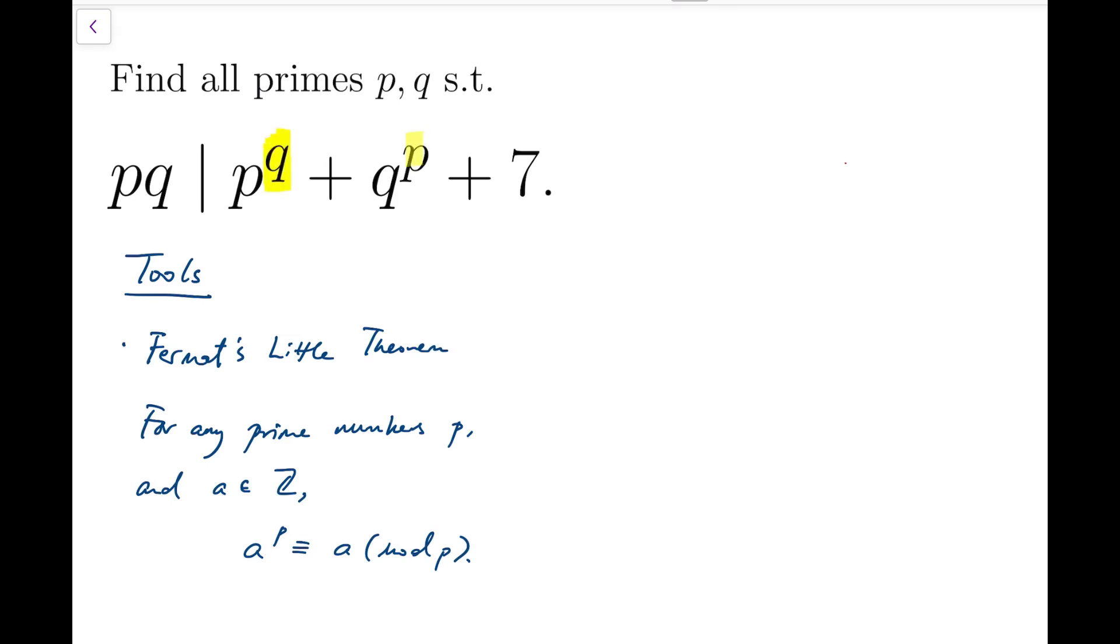This tool is useful because we have lots of prime powers and the indices, in particular, are primes. For example, p to the q, where q is a prime here, and q to the p, where p is a prime here. I'm going to try to use this theorem, in short it's called FLT, to reduce it to a smaller value. Let's begin. Given that pq divides this expression, I can say that in particular,